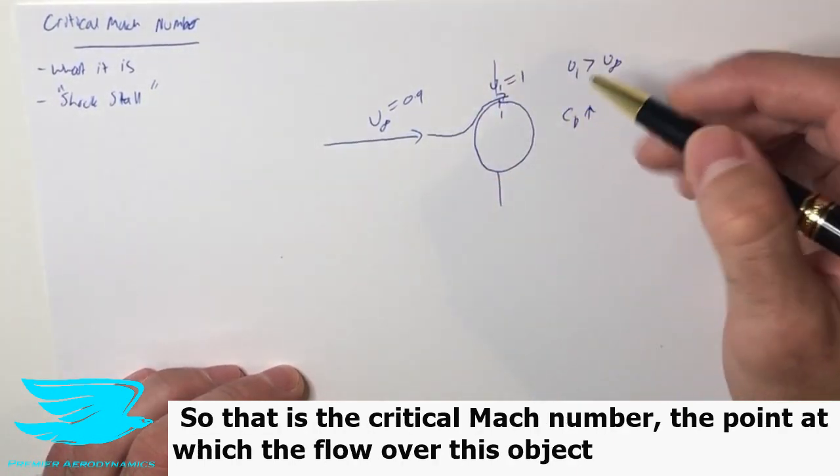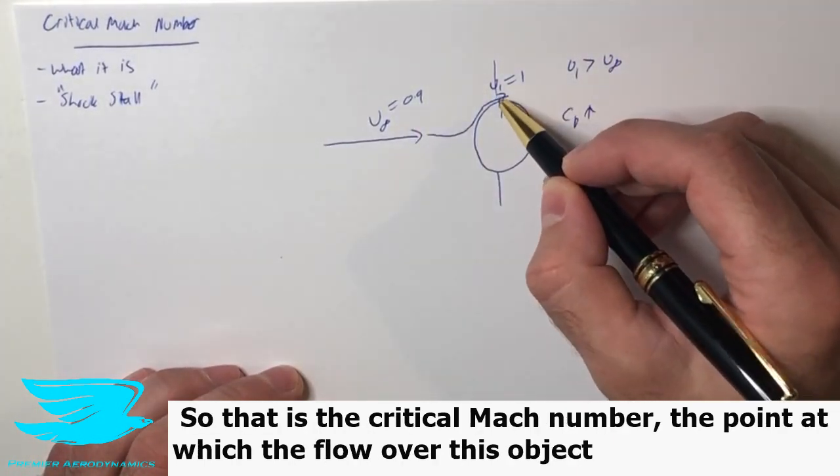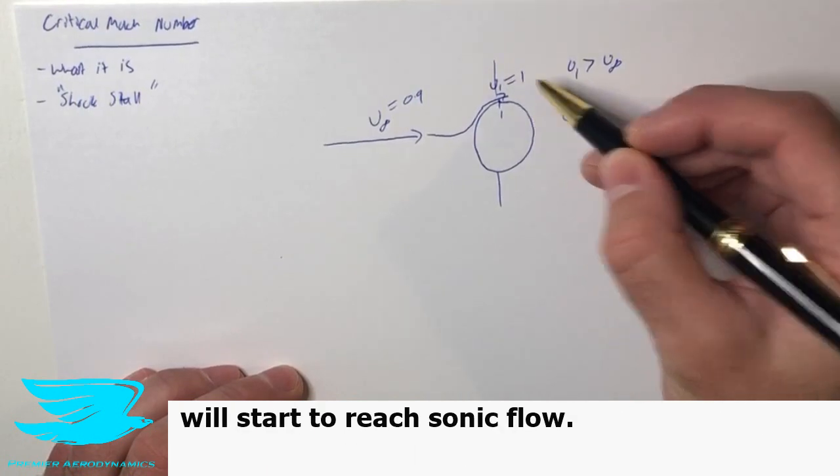So that is the critical Mach number, the point at which the flow over this object will start to reach sonic flow.